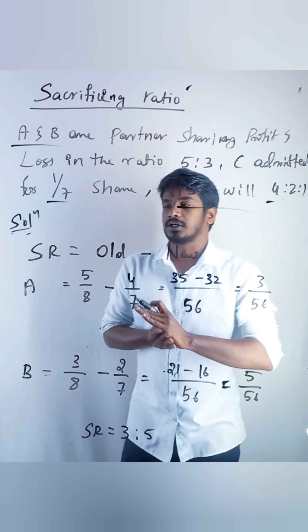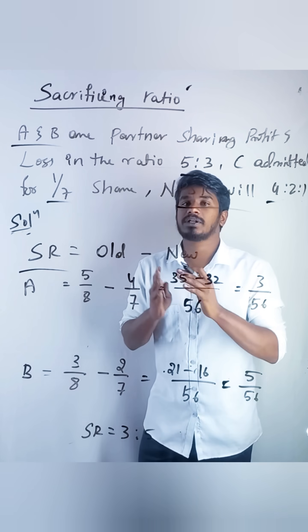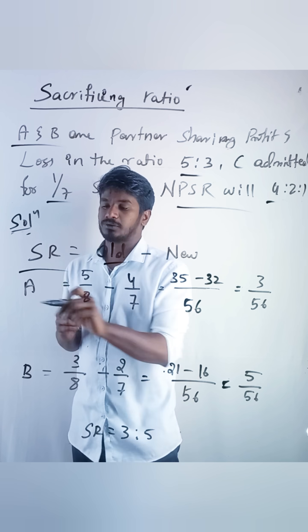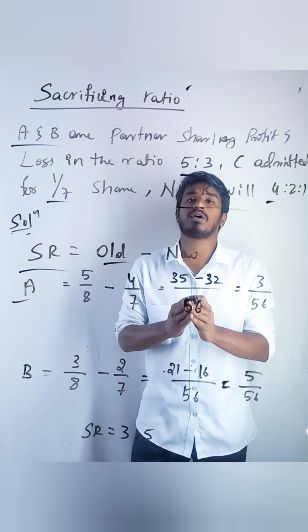So let us do the solution. So what is the formula? Sacrifice ratio is equals old ratio minus new ratio. We should calculate sacrifice ratio for old partners.